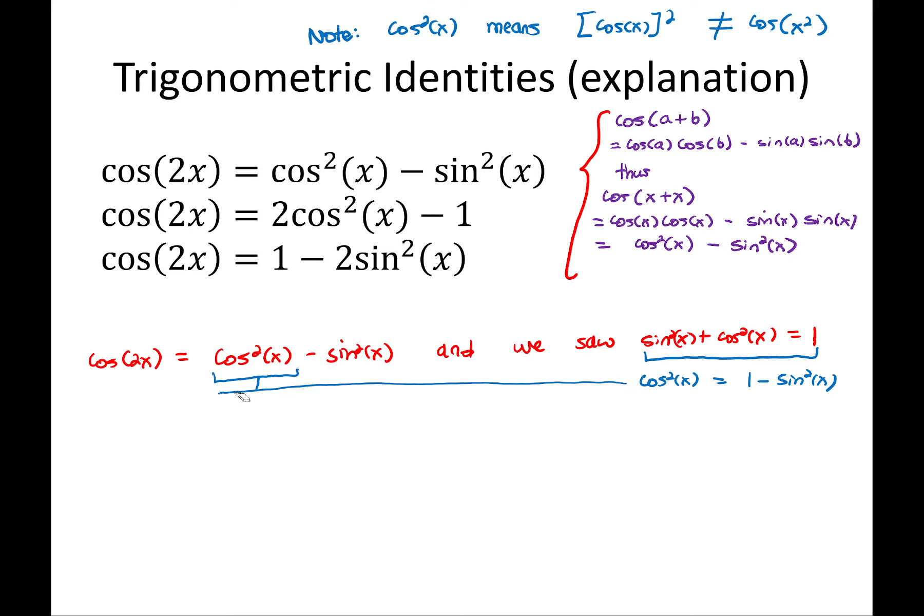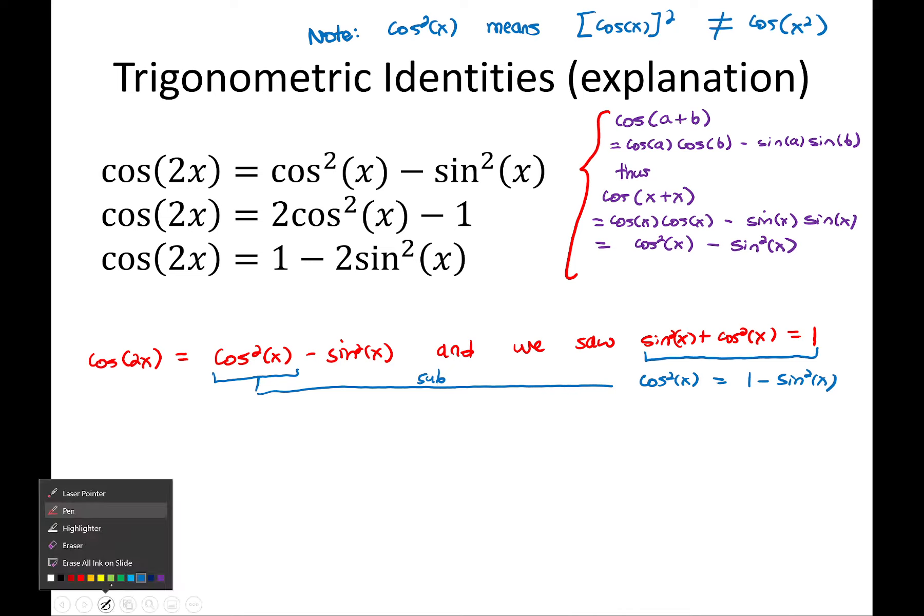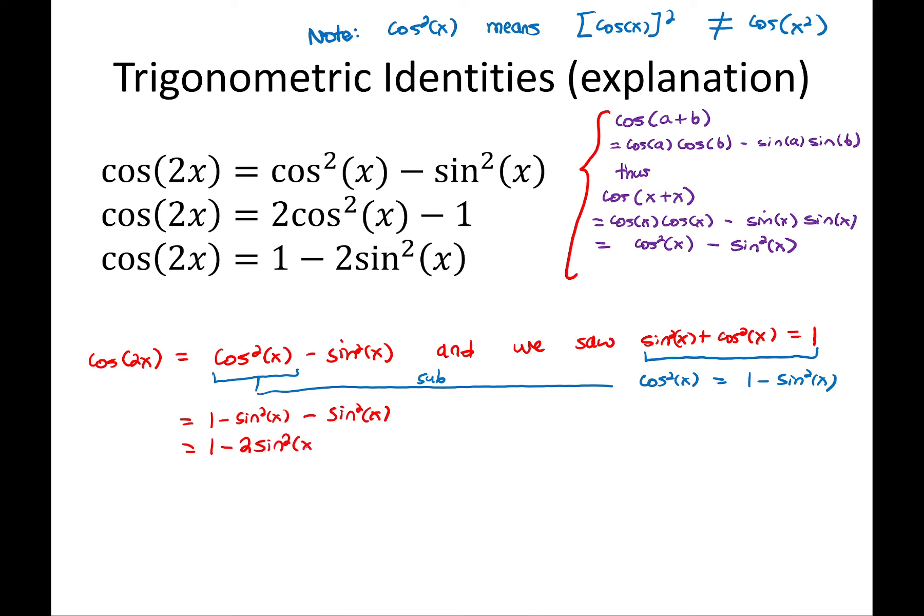Sub that in there. So equals 1 minus sine squared x minus the other sine squared x. So 1 minus an apple minus another apple is 1 minus 2 apples. 1 minus sine squared x minus 2 sine squared x. So that's this third identity done. And now the last one.